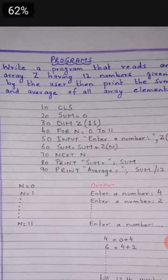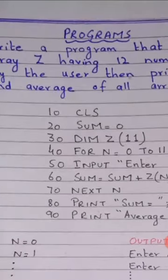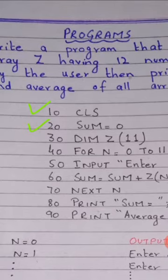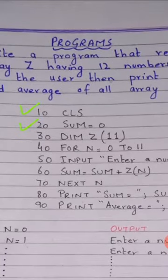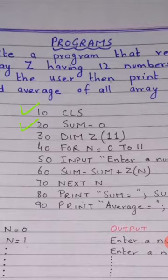Let's start with the program. Line number 10: CLS. Line number 20: sum is equal to 0. Because we have to calculate the sum and print it, so first of all the initial value of sum is equal to 0.